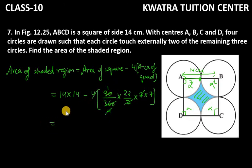You have 14 into 14, which is 196 and you have 22 into 7. 22 into 7 is 154. So 196 minus 154, you are left with 42 centimeter square.